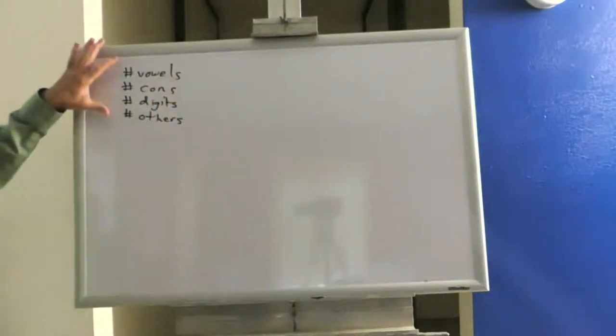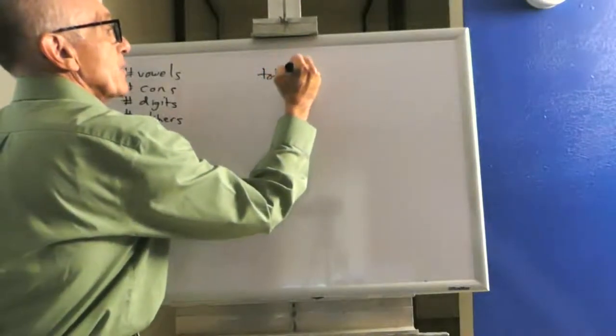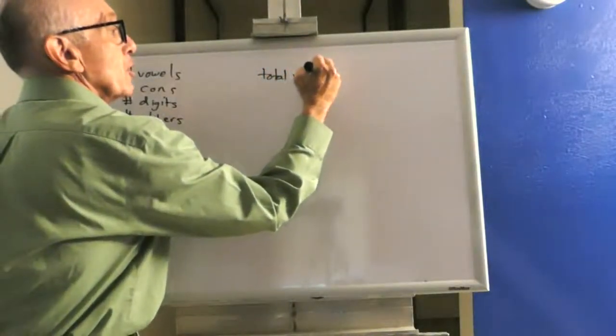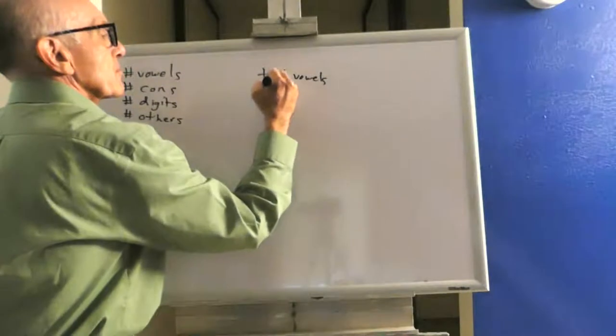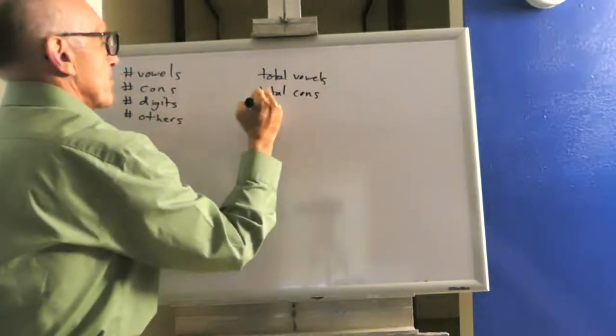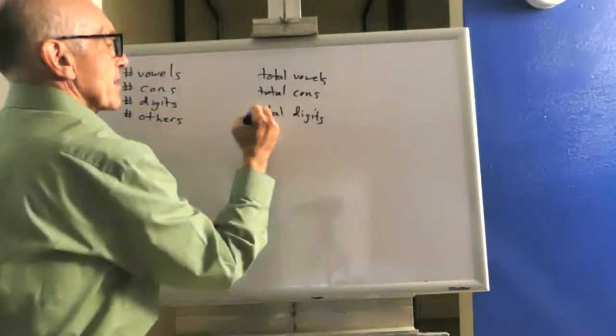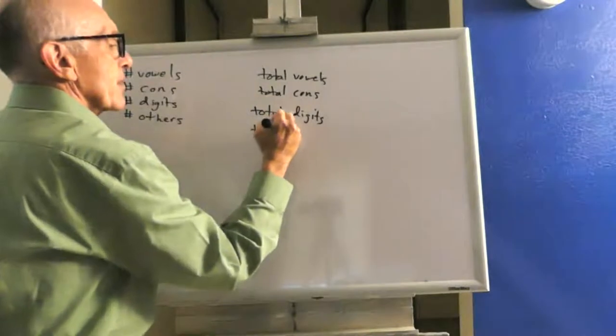We need to keep totals for each individual sentence, and we also need the grand total. How many vowels have been entered overall? How many consonants? How many digits? And how many others?